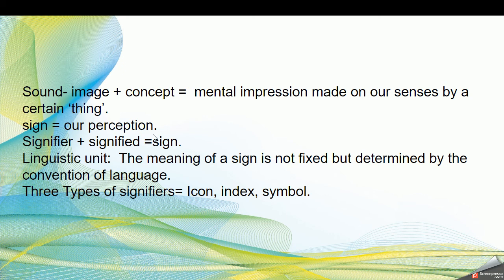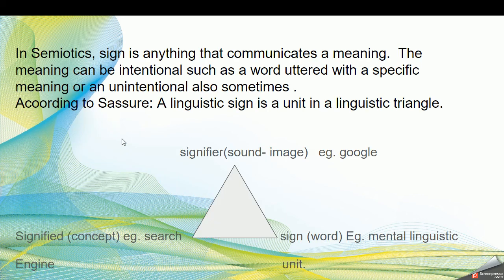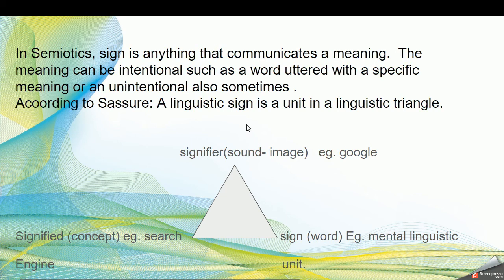According to Saussure, we need to keep this triangle in mind: a sign is a linguistic unit and is the combination of signifier and signified. In this triangle, the signifier is the image, the signified is the idea, and the sign is the linguistic word. That is all about sign in linguistics.